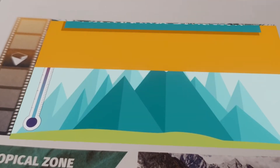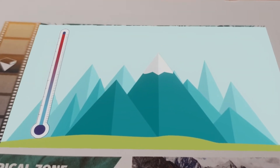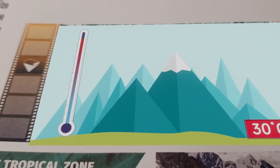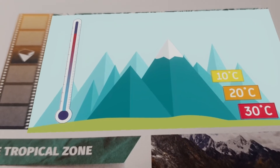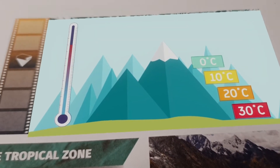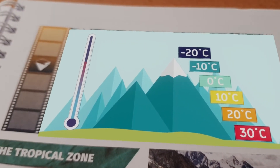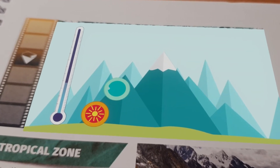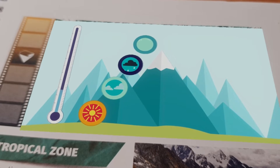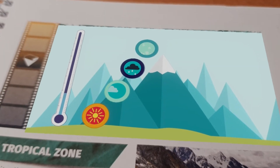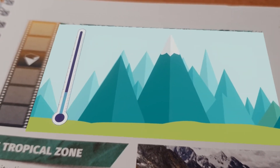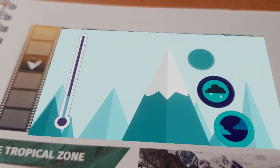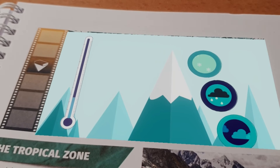Altitudinal Zonation: with increasing altitude, conditions usually become cooler and damper, so that the vegetation of mountains shows a corresponding zonation with elevation. Due to the decrease in temperature, there are several climatic zones in the mountains. If the snow line of a mountain range is very high, then it will have a greater variety of climates.